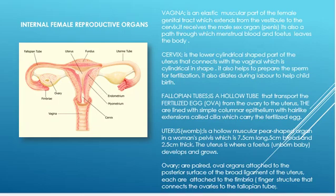That leads us to the internal sex organs. The internal female reproductive sex organs consist of the vagina, the cervix, the uterus, the fallopian tubes, and the ovaries. Let's take them one after the other.